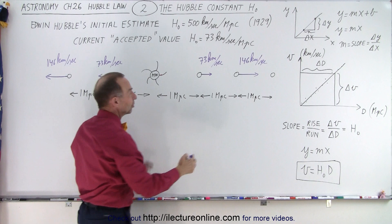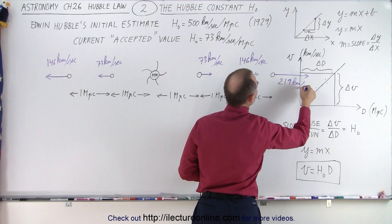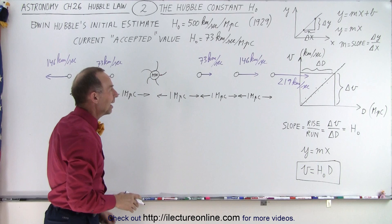What about this galaxy which is three megaparsecs away? It will be moving at a speed of, well, at another 73 that would be 219 kilometers per second, three times 73 because it's three times as far away.